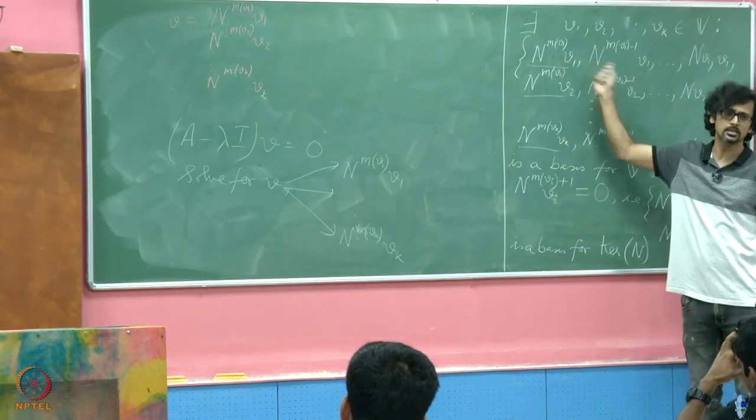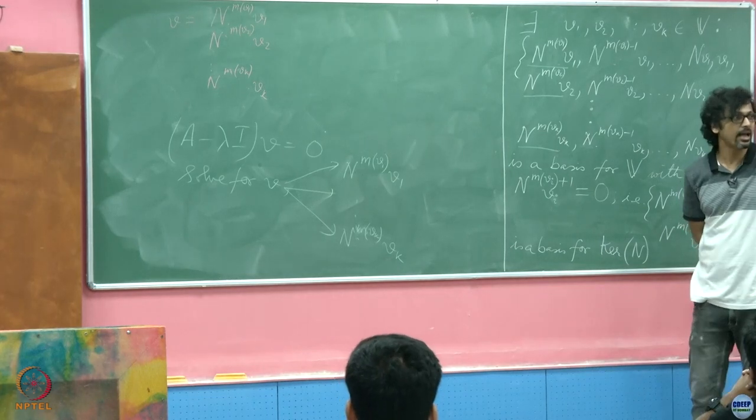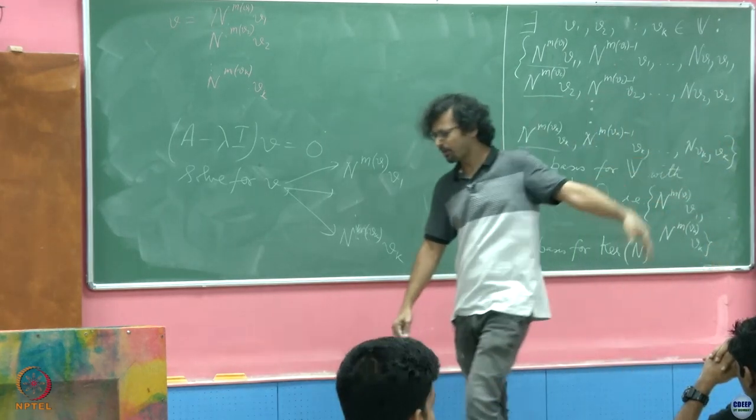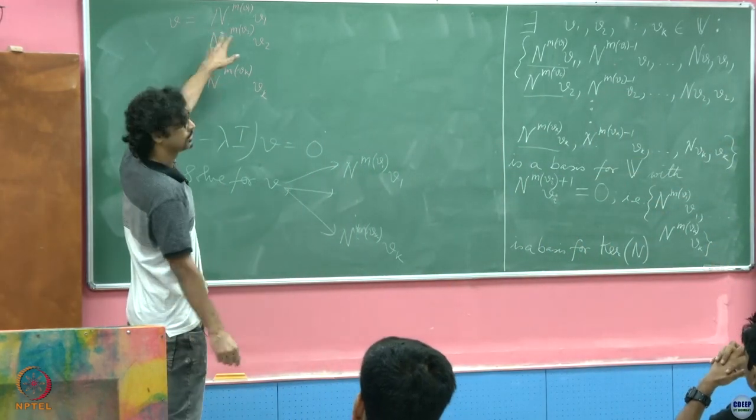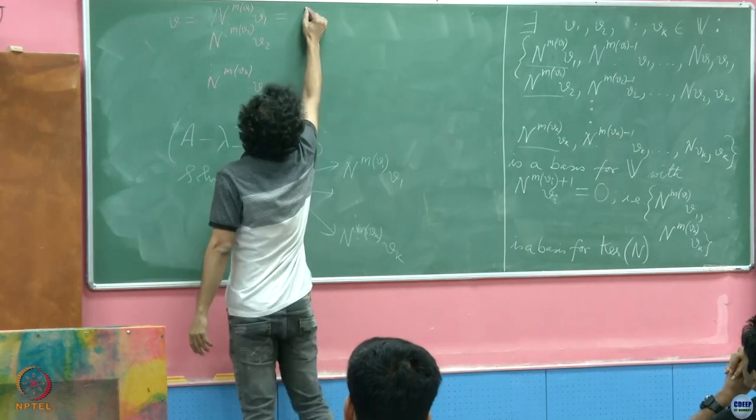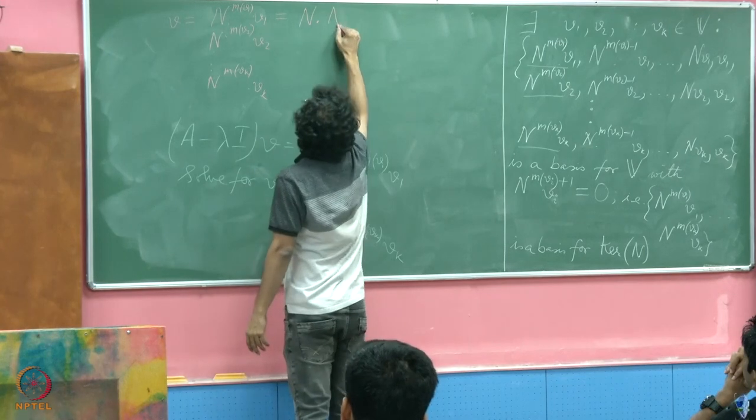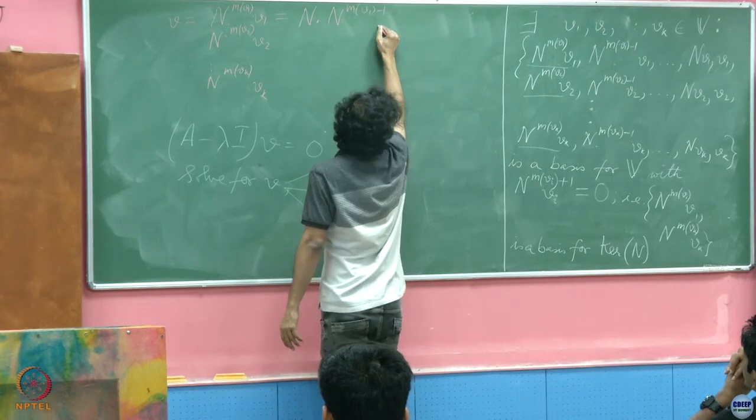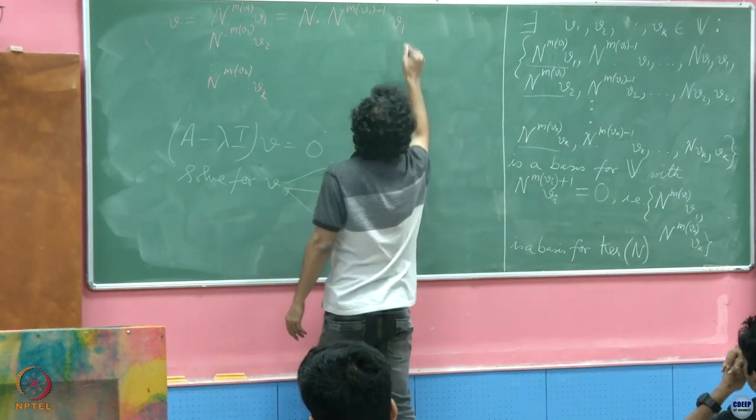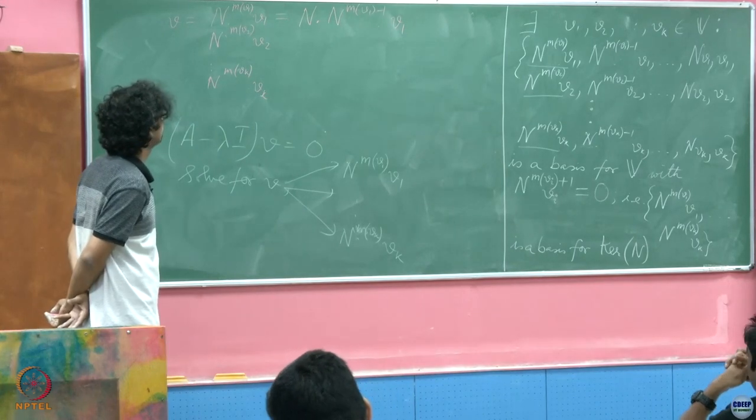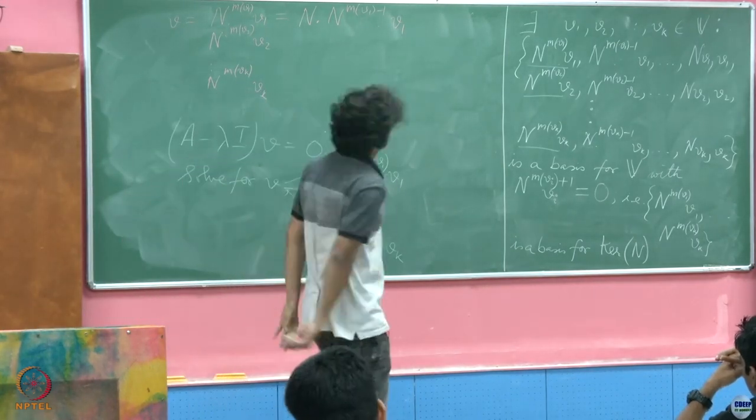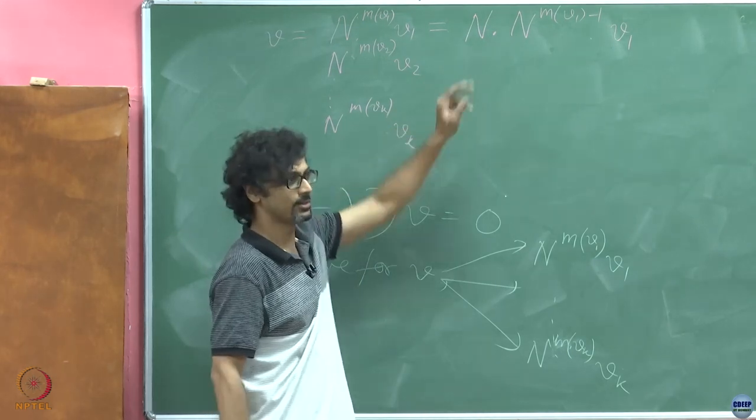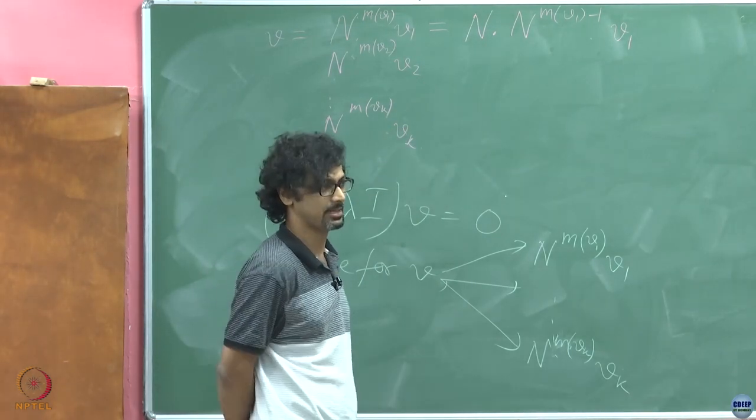How do you get from this to this, rather how would you set it up as a problem of finding this fellow given you know this fellow? What is the relation between this and this? You cannot have an n inverse, come on, n is a singular matrix, right? But that is the beauty, you are on the right track, you have found this. This it turns out is equal to n acting on n^(m_v1 - 1) v1. But now this is my unknown.